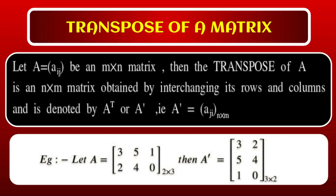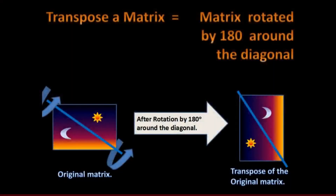The transpose is definitely a 3×2 matrix. The first row [3, 5, 1] becomes the first column, and the second row [2, 4, 0] becomes the second column. That is the transpose.